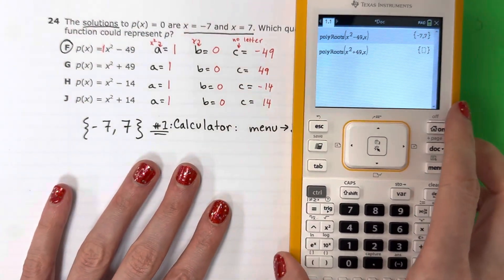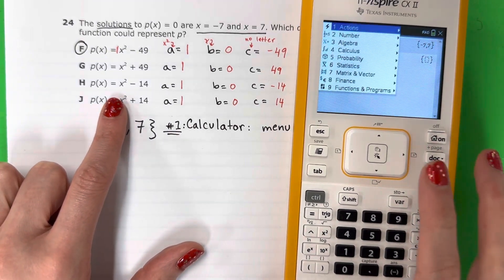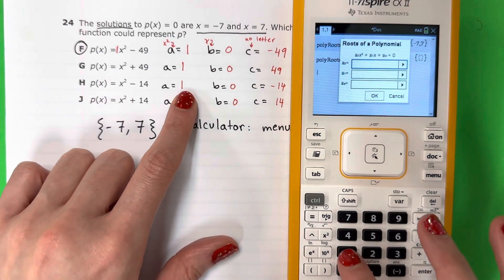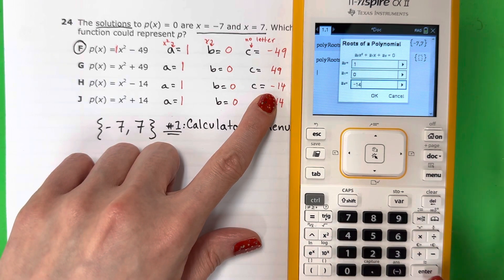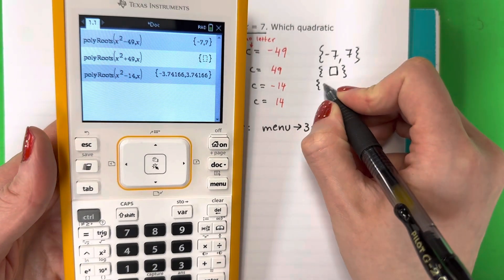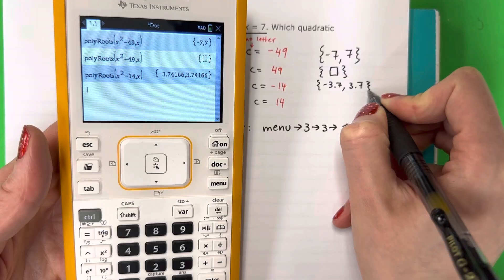Let's try one more, uno más, just to practice. Menu 3, 3, 1, enter. 1, 0, -14. Enter, enter, enter. That's not what I want, right? This is -3.7 and 3.7, it's not the same. So my answer is going to be F.